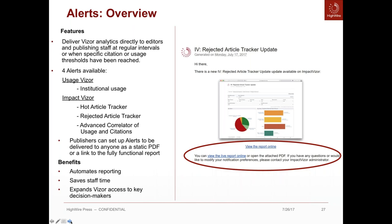What alerts does is help automate reporting. You can set up alerts to be sent out at regular intervals or when you choose. It saves staff time by having information come to them rather than them going to the Visors themselves. It also expands Visor access to key decision makers — not just publishing staff, but also editorial staff, editorial board members, and others.